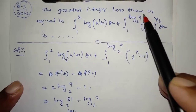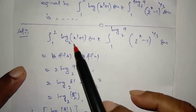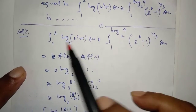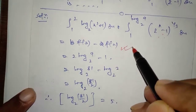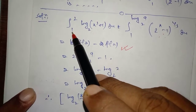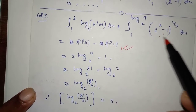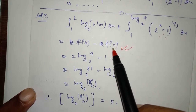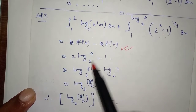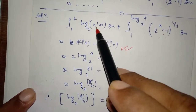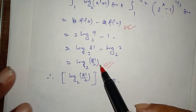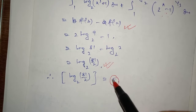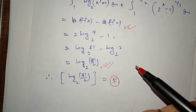Question 3: Finding the greatest integer less than or equal to the given integral expression. The key observation is that the functions are inverses of each other. Using the property: if f and g are inverses, then the integral equals b·f(b) − a·f(a). Here b=2, so putting x=2 and x=1, we get 81/2. The greatest integer value is 5.